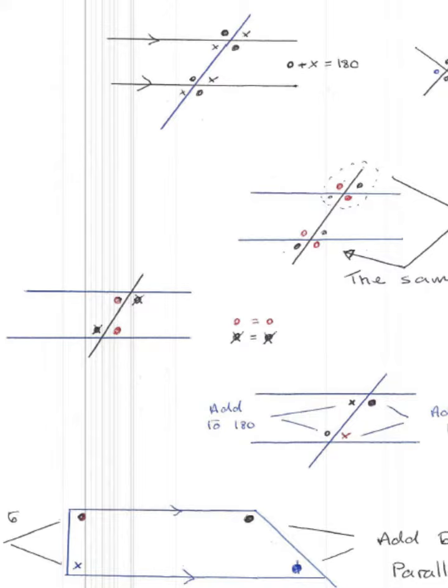create two sets of four little angles. On these, you can basically call them dots and crosses, and the dots and the crosses each have to add up to 180.